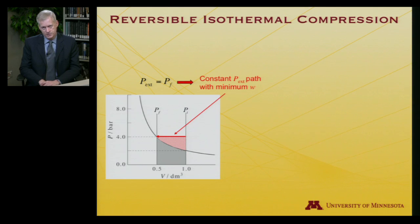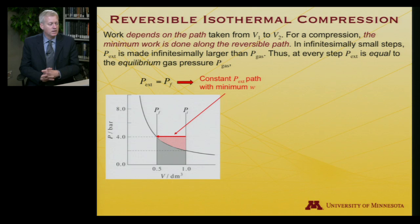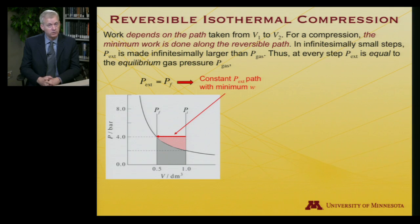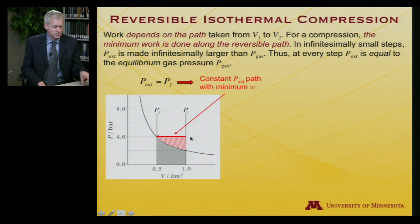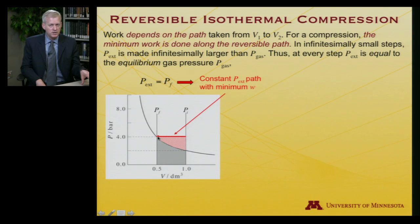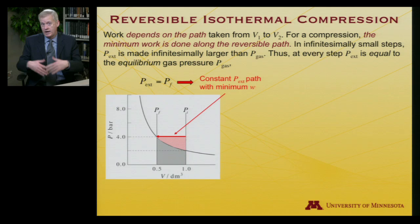The reversible isothermal compression is something important to discuss. Work depends on the path taken from V1 to V2 — we just saw two different amounts of work for compressing a gas from 1 liter to half a liter at the same temperature. The constant external pressure of 4 bar represents the minimum work needed for the compression, because it's exactly the pressure needed to reach the endpoint. At the end, the internal pressure of the gas equals the external pressure. The second example had excess pressure — that wasn't necessary.